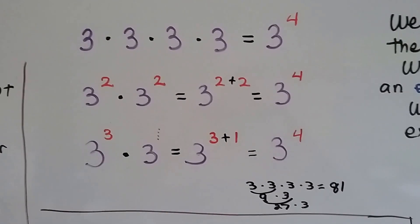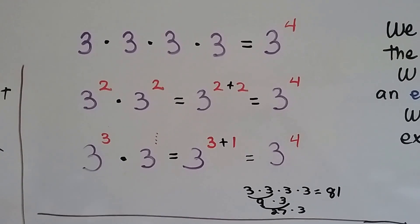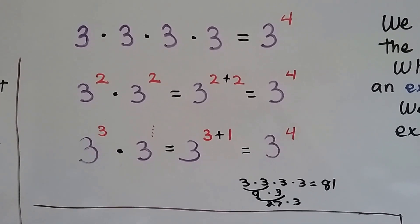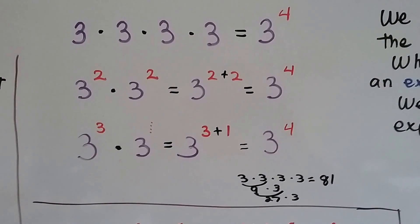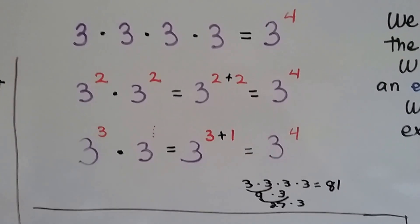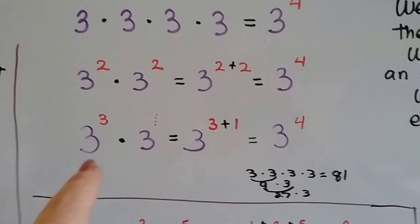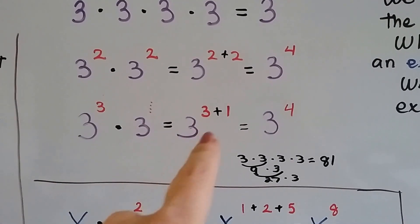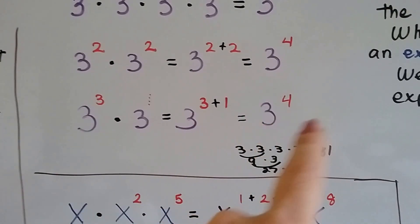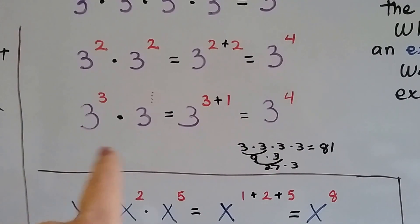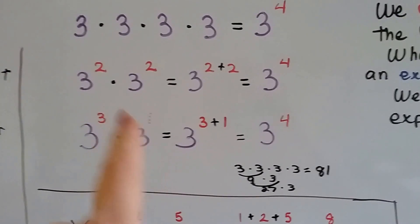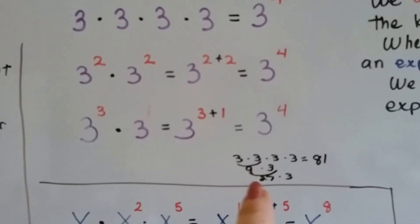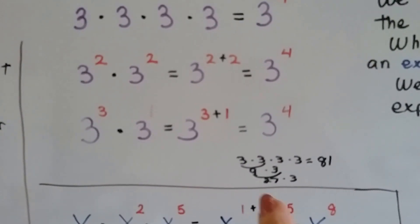We've got 3 times 3 times 3 times 3. To write it in exponential notation, we say 3 to the fourth power because we have these like bases — these 3's are all the same and there are four of them. If we had 3 to the second power times 3 to the second power, we would add 2 plus 2 and still get 3 to the fourth power. And even if it was 3 to the third power times a plain 3 — there's an invisible one there — it would be 3 to the 3 plus 1, which is 3 to the fourth power. We can compute this: 3 times 3 is 9, 9 times 3 is 27, and 27 times 3 is 81.